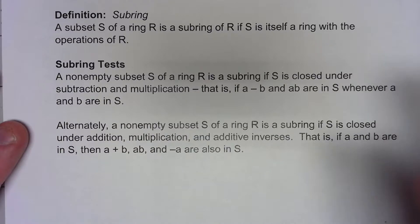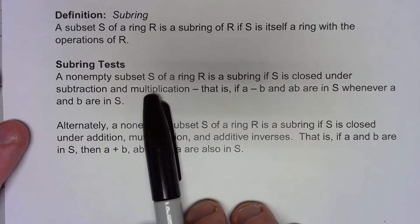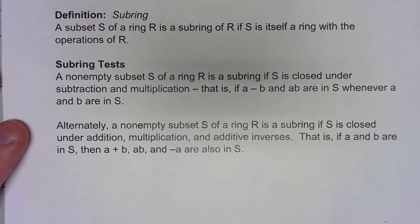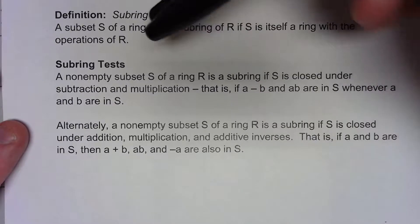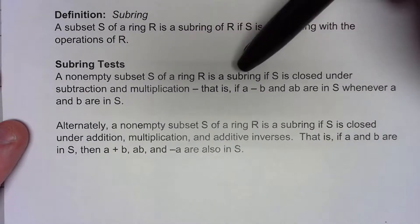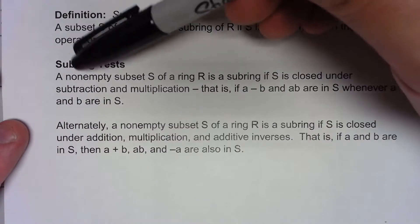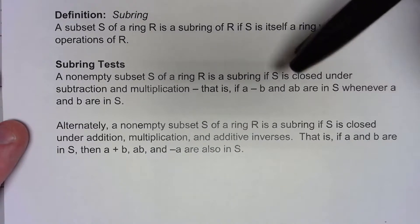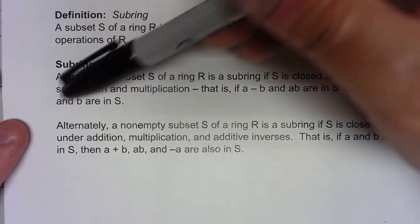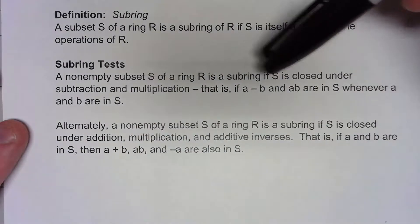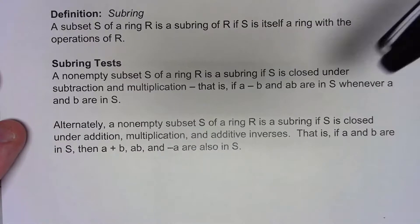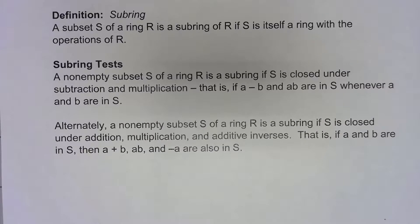And also, just like we had for subgroups, we've got different tests for figuring out whether something is a subring. Now this first one is very much like the one-step test for a subgroup. So what it says is that it's a subring if the subset is closed under subtraction and multiplication. Notice that we don't have to worry about inverses for the multiplication operation because we don't necessarily have inverses even in the original ring.